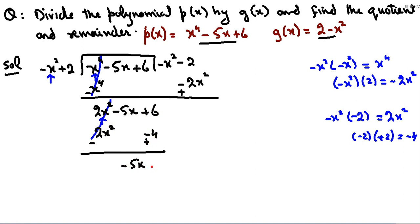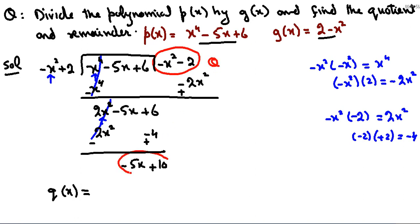अब बचा −5x + 6, और +4 आया, तो −5x + 10 हमारा remainder है। x की degree 1 है और divisor की degree 2 है, तो remainder की degree divisor से कम है, इसलिए division stop होता है। So, quotient is −x² − 2, and remainder is −5x + 10। Thank you।